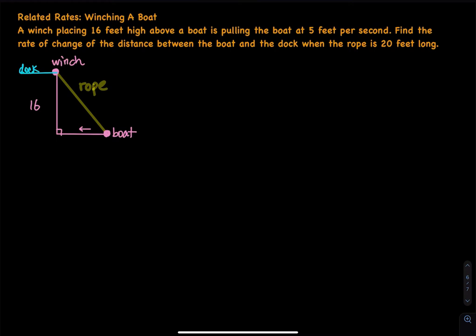Winching a boat. A winch placed 16 feet high above a boat is pulling the boat at 5 feet per second. Find the rate of change of the distance between the boat and the dock when the rope is 20 feet long.